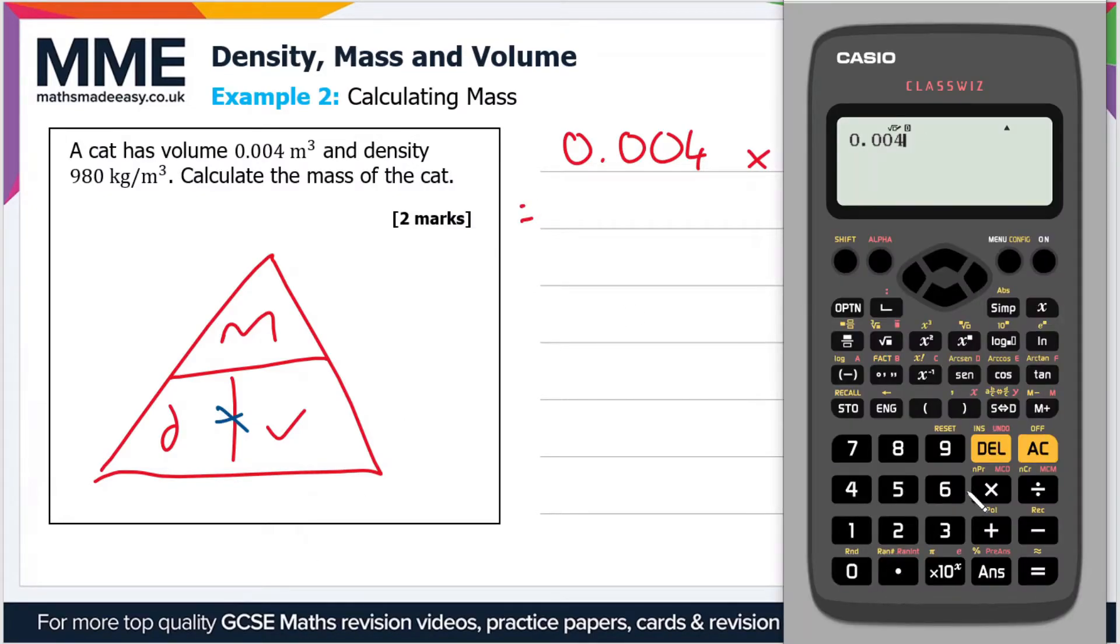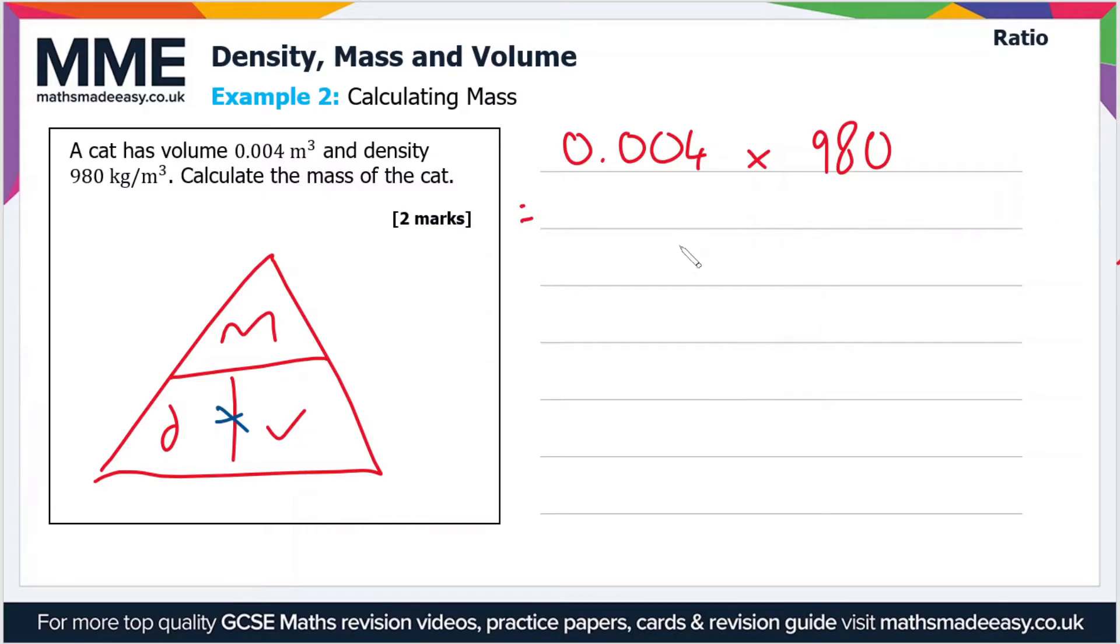Let's do that on the calculator: 0.004 times 980. That gives us 3.92, so that's 3.92 kilograms. That's because the units for density are in kilograms per meters cubed and the units for volume are in meters cubed.